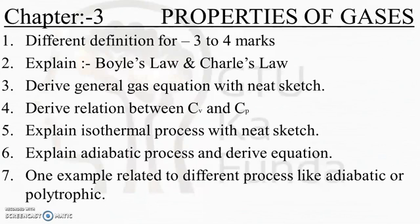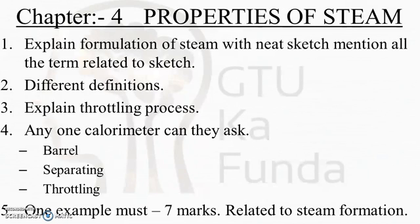Properties of steam — this is one of the easiest chapters I have ever seen in Elements of Mechanical Engineering. They will ask you to explain the formation of steam with a neat sketch and mention all related terms such as latent heat and sensible heat. There is one key graph in the second page of the Elements of Mechanical Engineering book — go through that graph for latent heat, sensible heat, and conversions. One example will also be asked from this chapter.